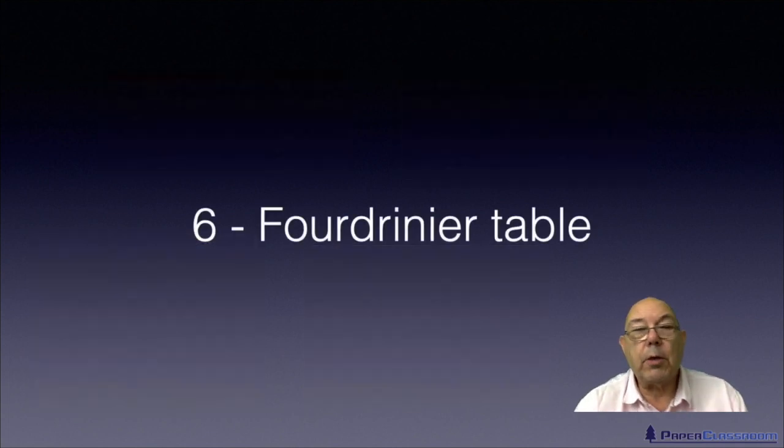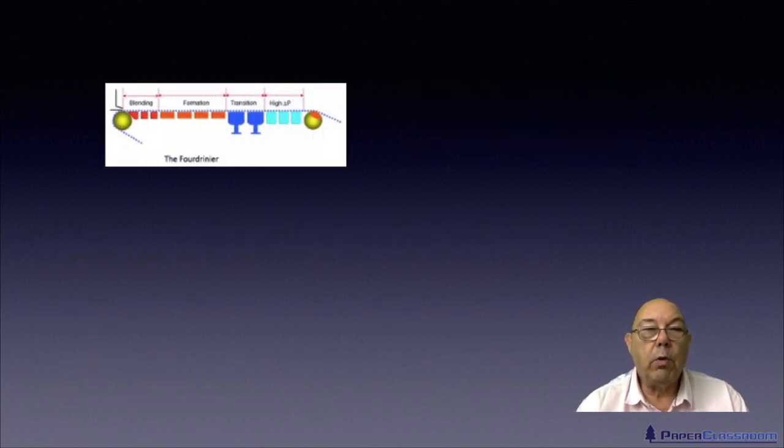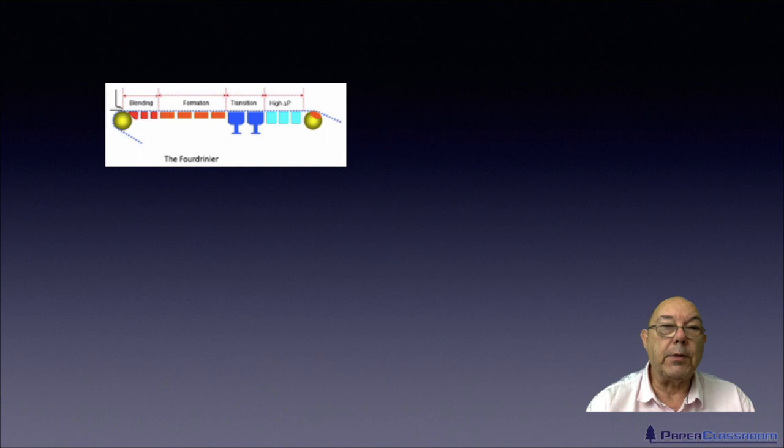And the last thing we'll talk about is the fourdrinier table itself. So we'll look at the four zones: the blending zone, the formation zone, the transition zone, and finally the high vacuum zone.